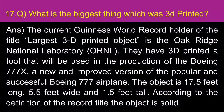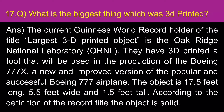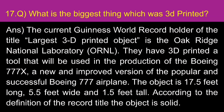What is the biggest thing that was 3D printed? The current Guinness World Record holder for the largest 3D printed object is the Oak Ridge National Laboratory (ORNL). They 3D printed a tool that will be used in the production of the Boeing 777X airplane — a new and improved version of the popular Boeing 777. The object is 17.5 feet long, 5.5 feet wide, and 1.5 feet tall, and is solid according to the record title definition.